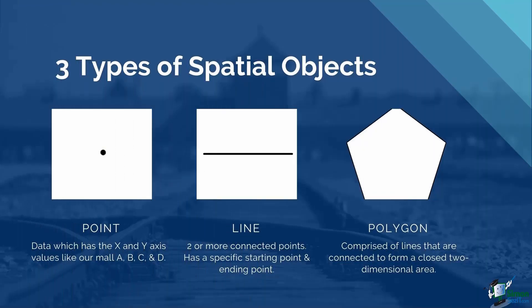There are three types of spatial objects in Tableau: point, line, and polygon. Point is data which has X and Y axis values like our malls A, B, C, and D. Line would be two or more connected points — lines are visible when you trace a bus route or measure a distance between two locations; a line has a specific starting point and ending point. Polygons are comprised of lines connected to form a closed two-dimensional area with a measurable perimeter — state borders and land area shapes are considered polygons.